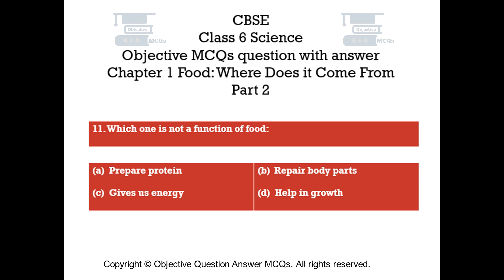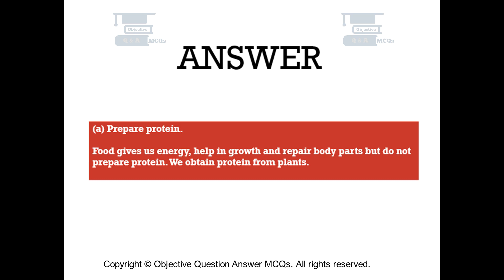Question number 11. Which one is not a function of food? Option A: Prepare protein. Option B: Repair body parts. Option C: Gives us energy. Option D: Help in growth. The right answer is Option A. Food gives us energy, helps in growth and repairs body parts, but does not prepare protein. We obtain protein from plants.